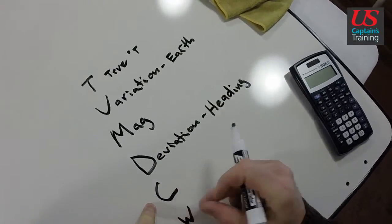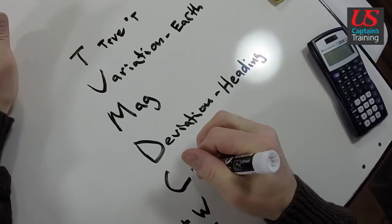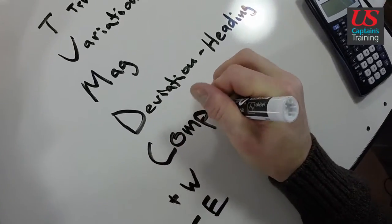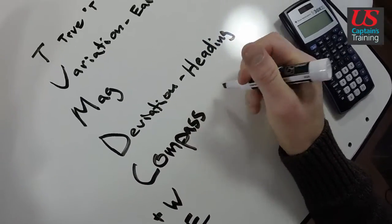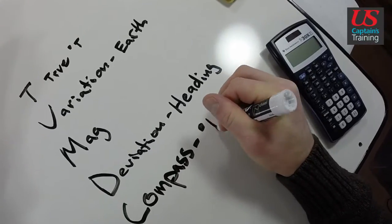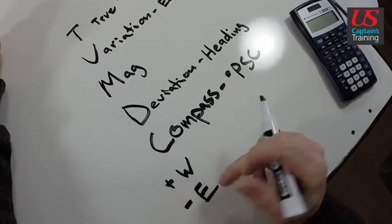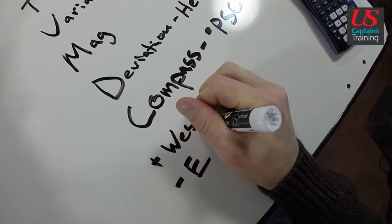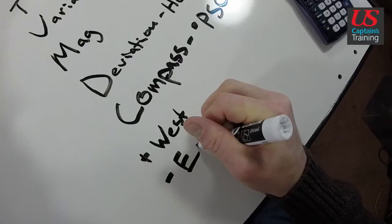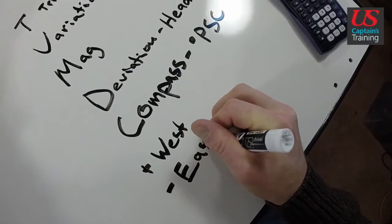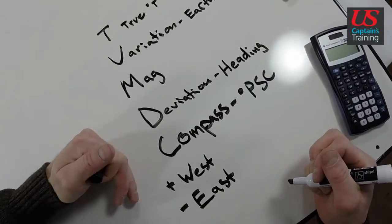And this lower one is compass. This is the compass on your vessel. And it's in degrees PSC. Per standard compass. And now this plus whiskey is west. And this minus ethics is east.